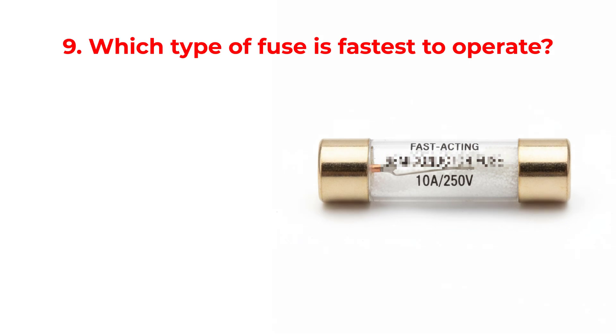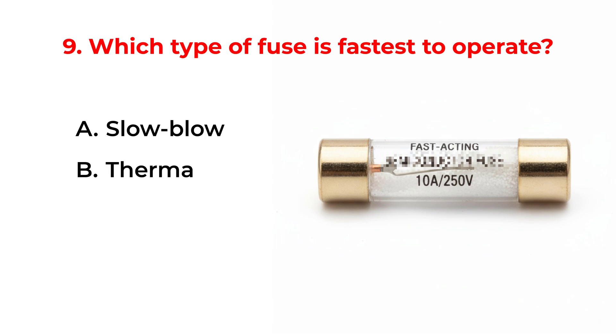Which type of fuse is fastest to operate? A. Slow blow. B. Thermal. C. Glass cartridge. D. Semiconductor.